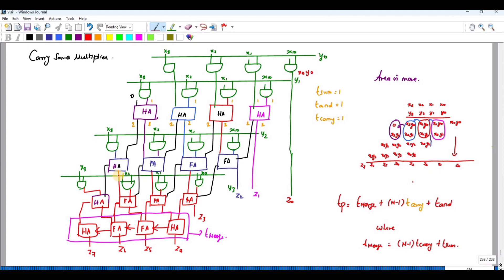And finally, the output is given to a half adder, followed by a full adder, followed by a half adder, followed by a half adder. In order to obtain z4, z5, z6, and z7. We will get another output, z8 also.